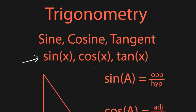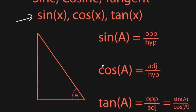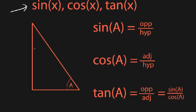The definition of these functions is based on a right triangle. Here's a basic right triangle — that means one of the angles is 90 degrees. I've labeled one of the remaining angles as angle A. If I take sine of that angle and use it as the input, the output is going to be the ratio of the opposite side to the hypotenuse. From the perspective of angle A, the opposite side is the one not touching it. The hypotenuse is always opposite the 90-degree angle.